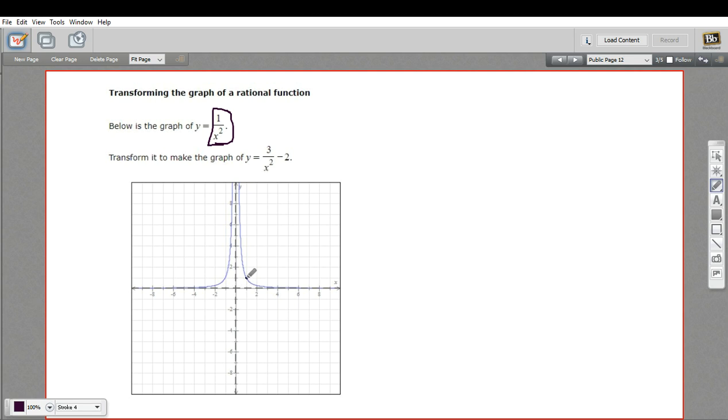So if we look at a point like this, this is the point 1, 1. That's going to transform to 1, 3. So this point is really going to be here.